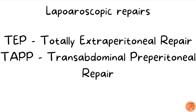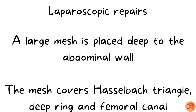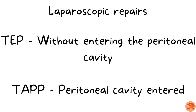TEP is usually preferred over TAPP. In laparoscopic repairs, a large mesh is placed deep to the abdominal wall, extending across the midline to the opposite side, covering important areas including Hesselbach's triangle, the deep ring, and the femoral canal — covering all possible sites of hernia. In TEP, the peritoneal cavity is not entered at all; it is a totally extraperitoneal procedure using an anterior approach to reach the extraperitoneal space. In TAPP, the peritoneal cavity must be entered first, then the extraperitoneal space is reached to place the mesh.